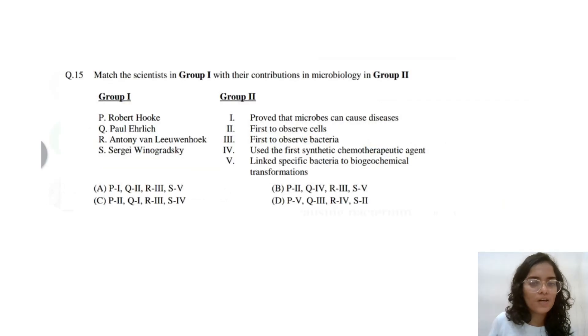Coming to the next question. It is a match the following again. Robert Hooke was the person who was first to observe cells. He observed in a slice of cork. Then, Paul Ehrlich, he is the father of chemotherapy, so he used the first synthetic chemotherapeutic agent. Then, Anthony Van Leeuwenhoek, he was the first one to observe bacteria.